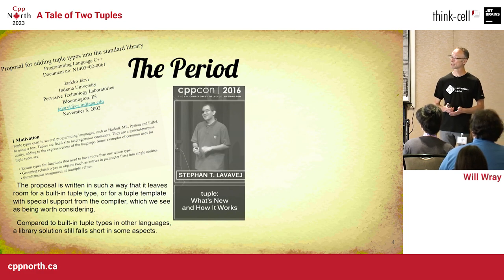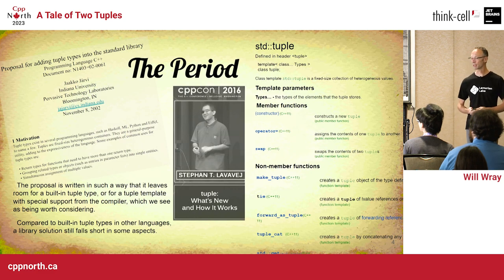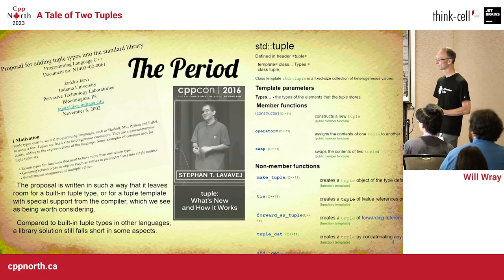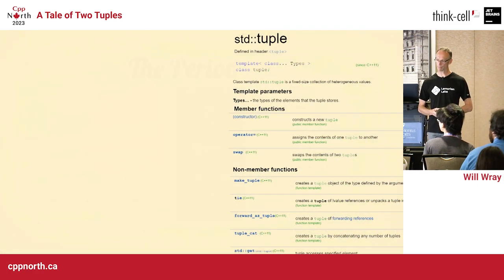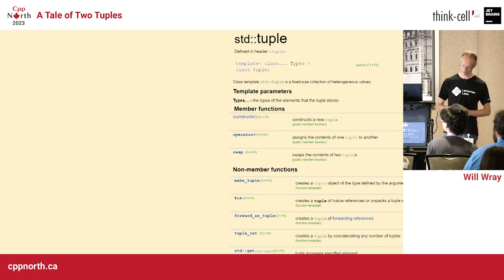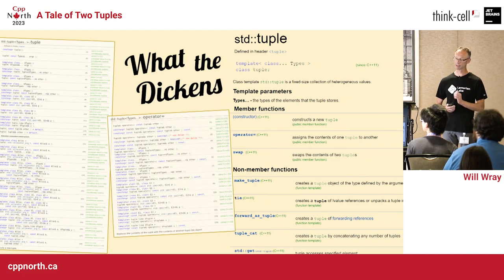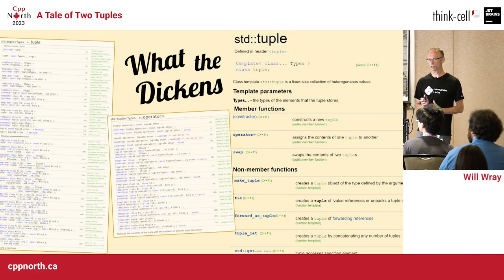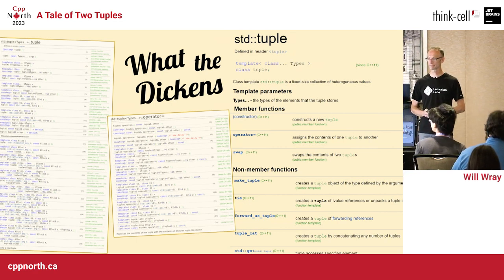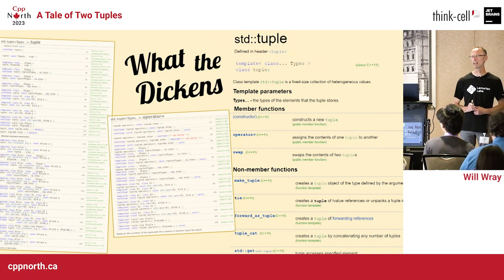This isn't a talk about std::tuple — the CppCon talk by Stefan is the one to watch for that. Standard tuple has constructors, assignment operators, swap, and some helper functions. There are also 28 constructors and 14 assignment operators. Interestingly, 'what the Dickens' has nothing to do with Charles Dickens — it's from Shakespeare's Merry Wives of Windsor, where they think Dickens was the name of he who should not be named.